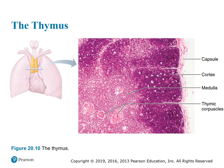The thymus differs from other lymphoid organs in important ways: it has no follicles because it lacks B cells; it does not directly fight antigens; and it functions strictly in T lymphocyte maturation. It contains the blood-thymus barrier that keeps immature T lymphocytes isolated from antigens to prevent premature activation. The stroma is made up of epithelial cells, not reticular fibers, and provides the environment in which T lymphocytes become immunocompetent. Figure 20.10 shows the thymus histologically with a capsule, outer cortex, inner medulla, and thymic corpuscles in the medullary region.